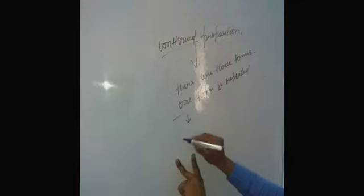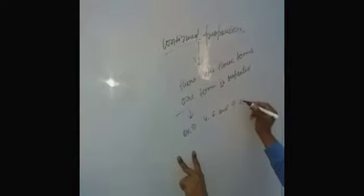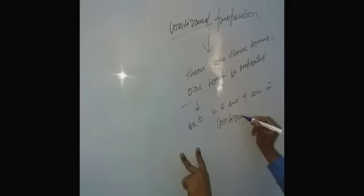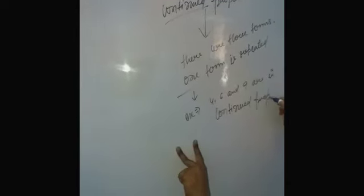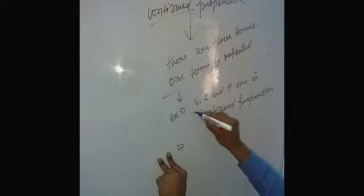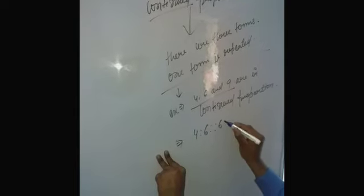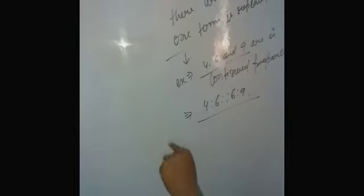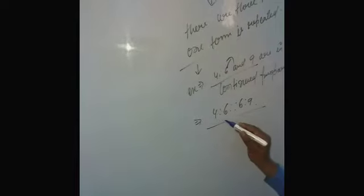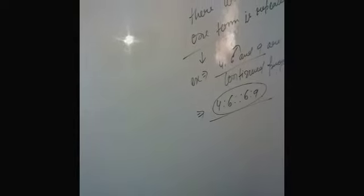For example, 4, 6 and 9 are in continued proportion. We write it in proportion form: 4 is to 6, proportion 6 is to 9. One term is repeated — 6 is repeated. So 4 ratio 6 ratio 6 is to 9 is in proportion. They are in continued proportion.